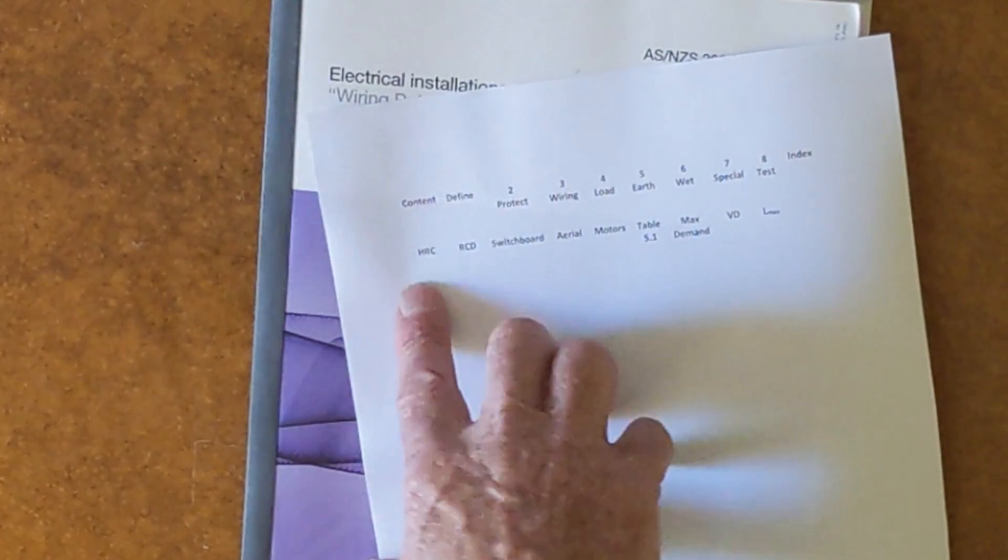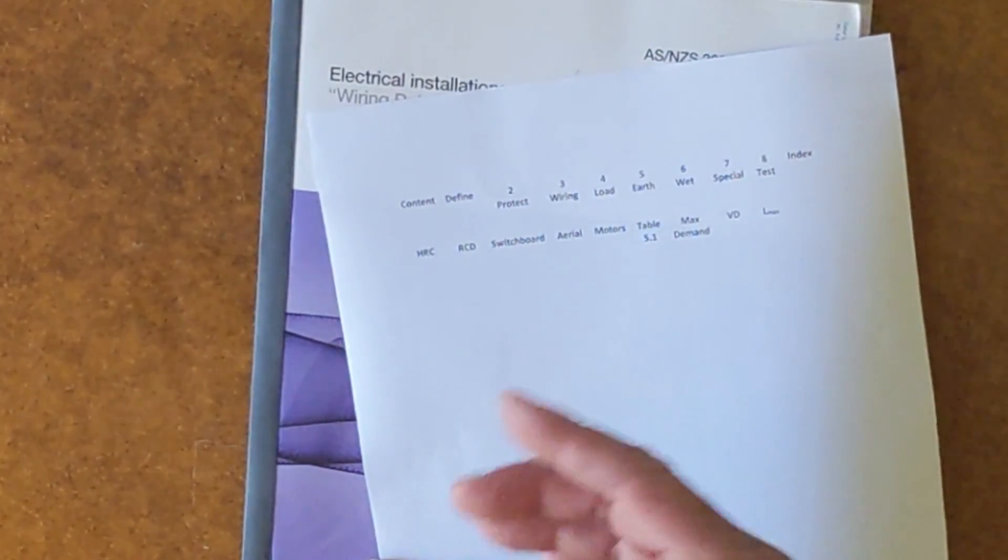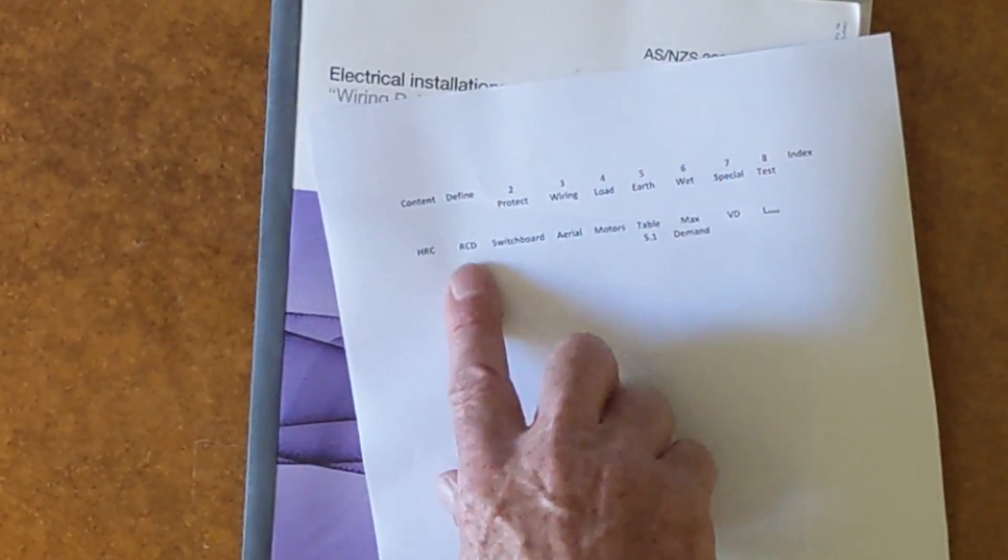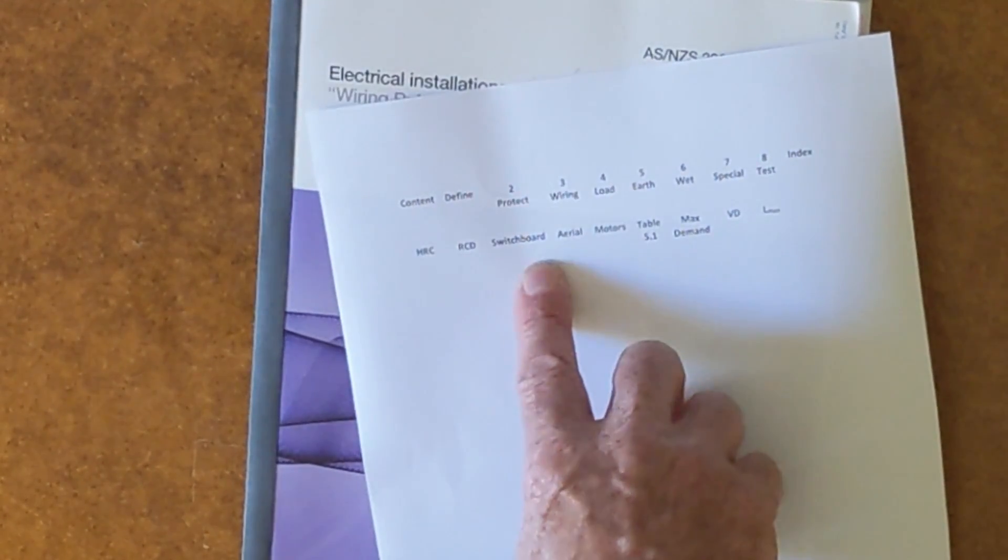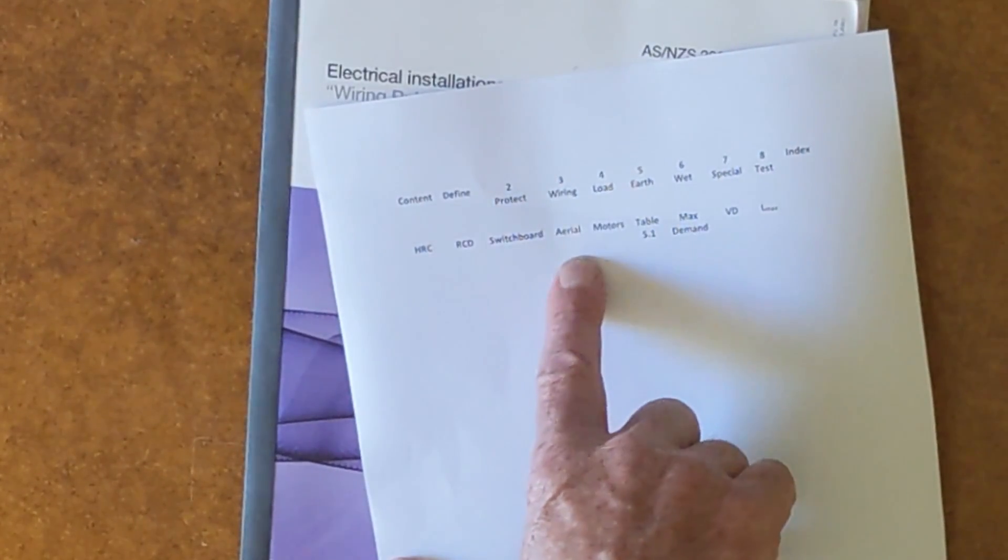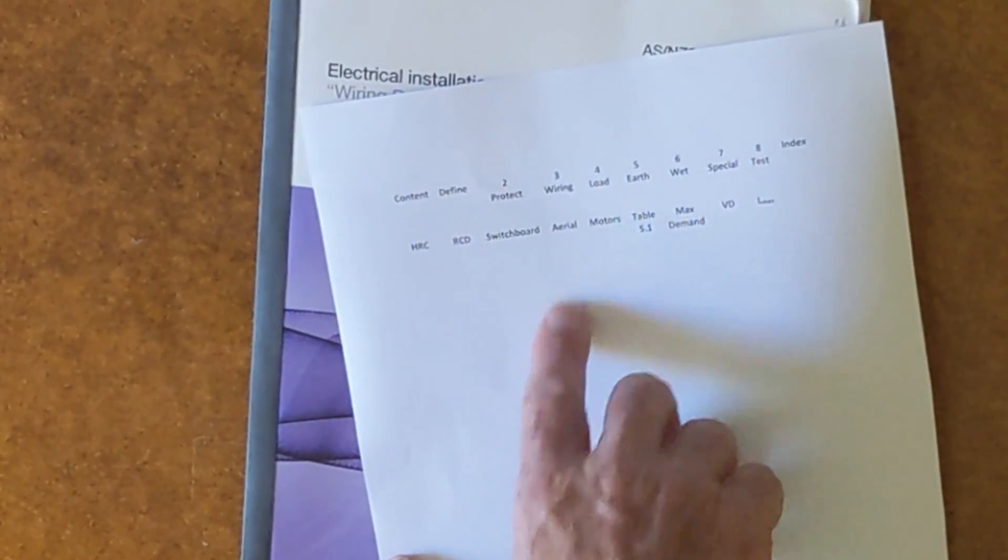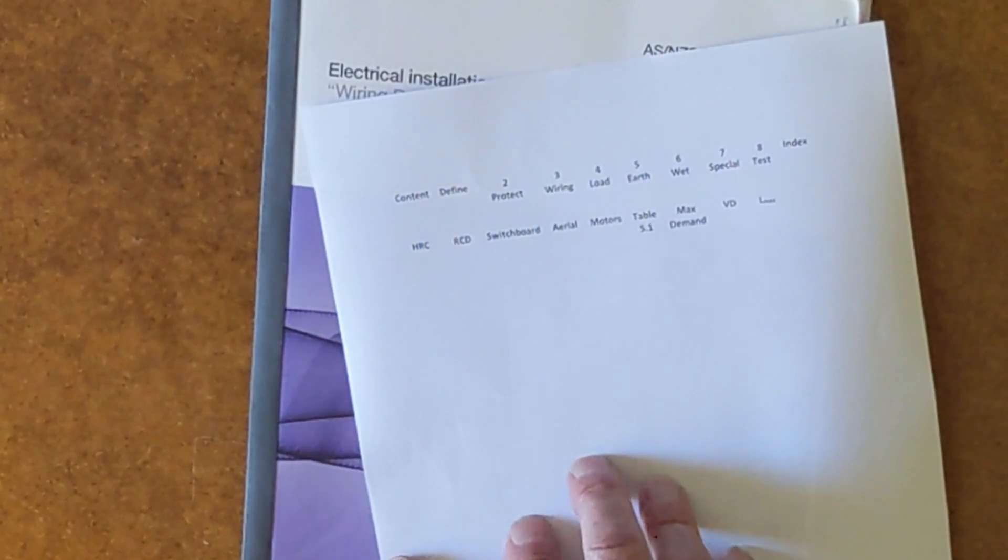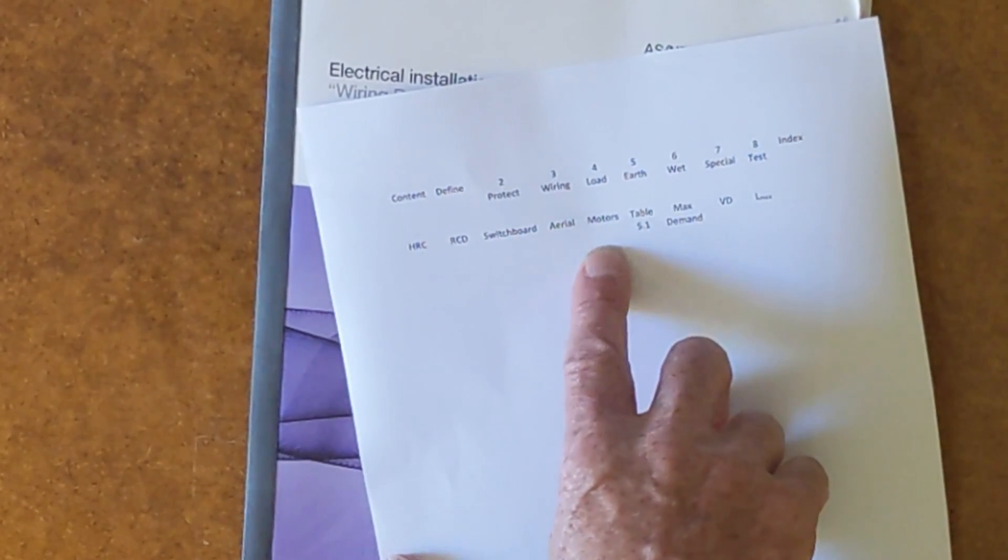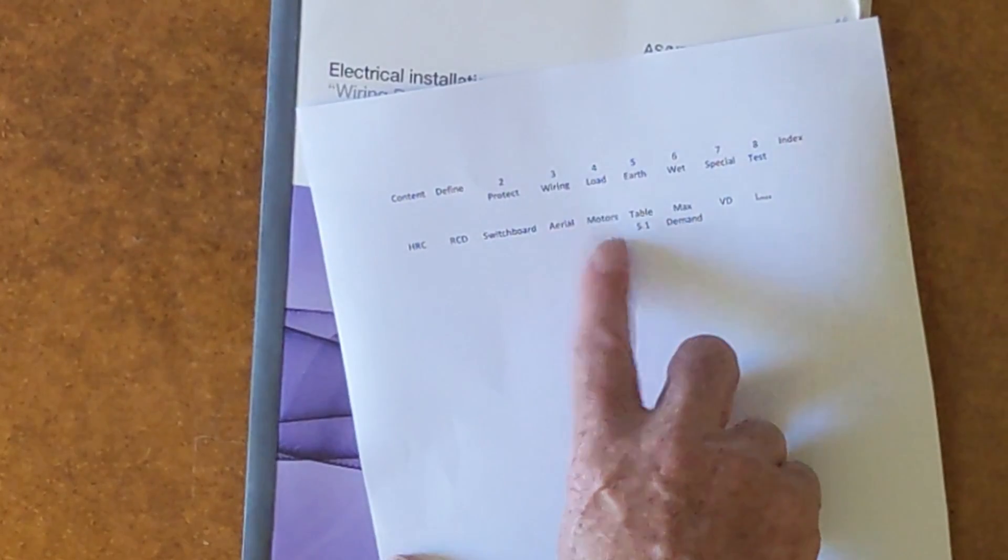All I've got down the side is HRC fuses. That's that point nine business making up the difference between HRC fuses and circuit breakers. Where we need RCDs, switchboards, aerial cables. I haven't put underground cables because I know that it's right before aerial. I don't need two tags.